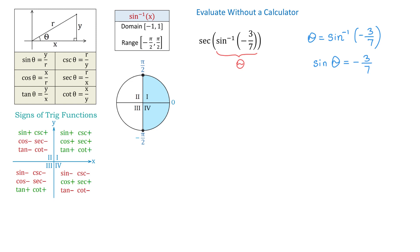Now because the range of the inverse sine function is any angle from negative pi over 2 to positive pi over 2, we see that angle theta is either in quadrant 4 or in quadrant 1. If we take a look at the signs of trigonometric functions, we see that in quadrant 1 sine is positive, but in quadrant 4 sine is negative. In our problem sine of theta is a negative number, therefore angle theta will be in quadrant 4.